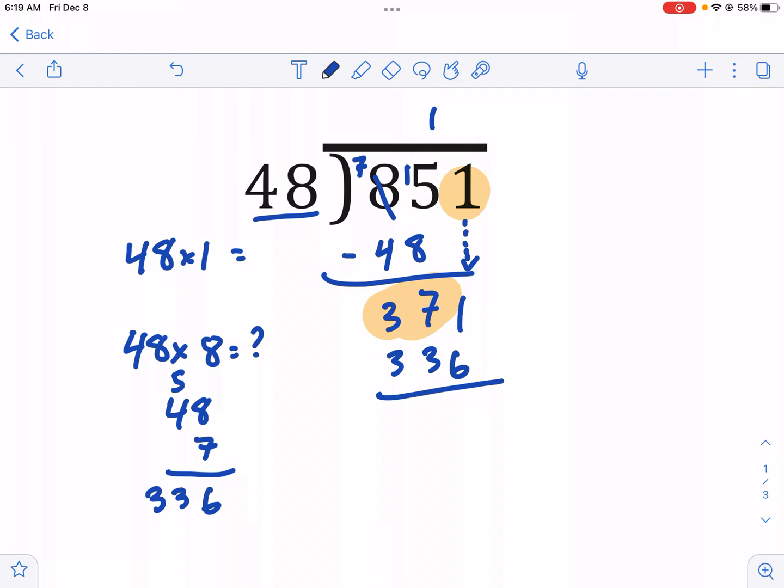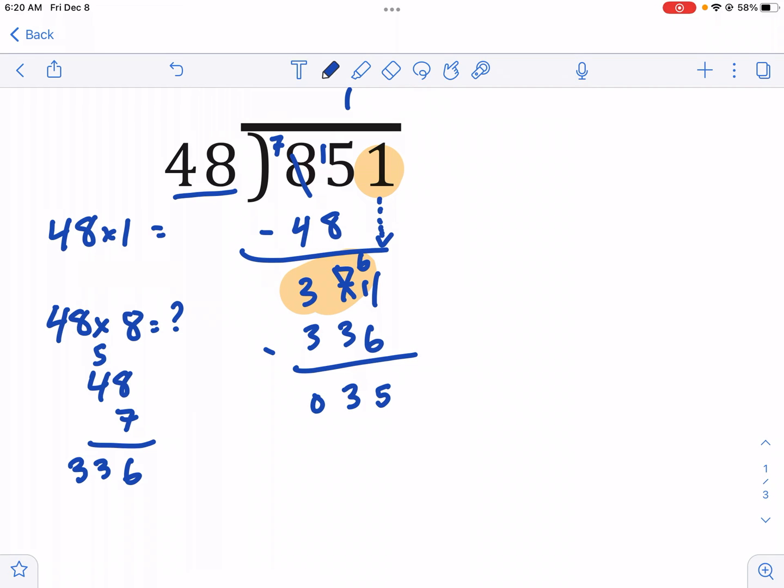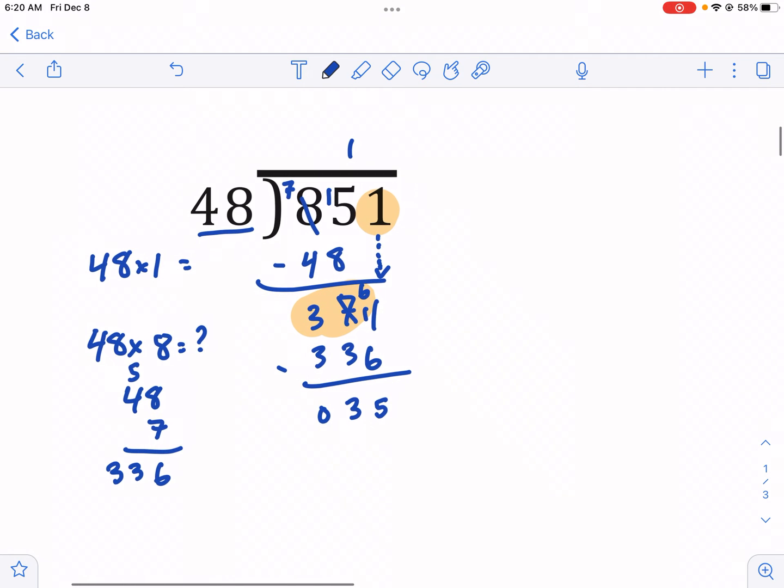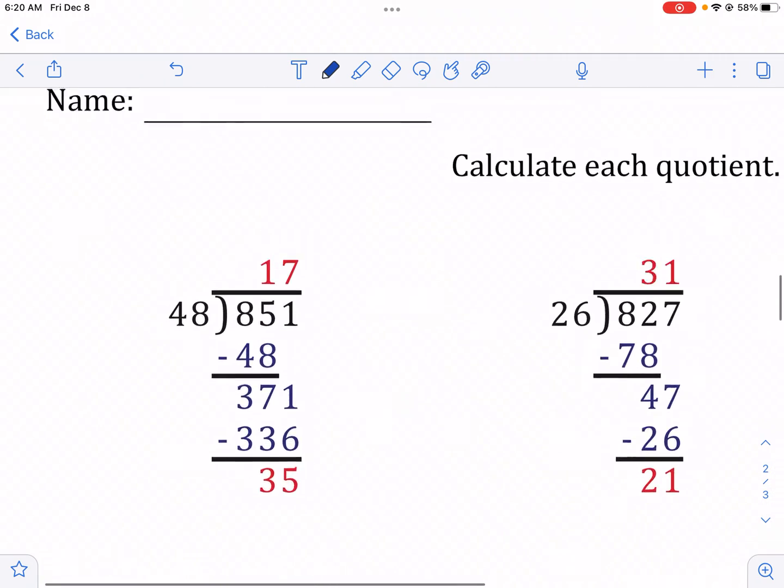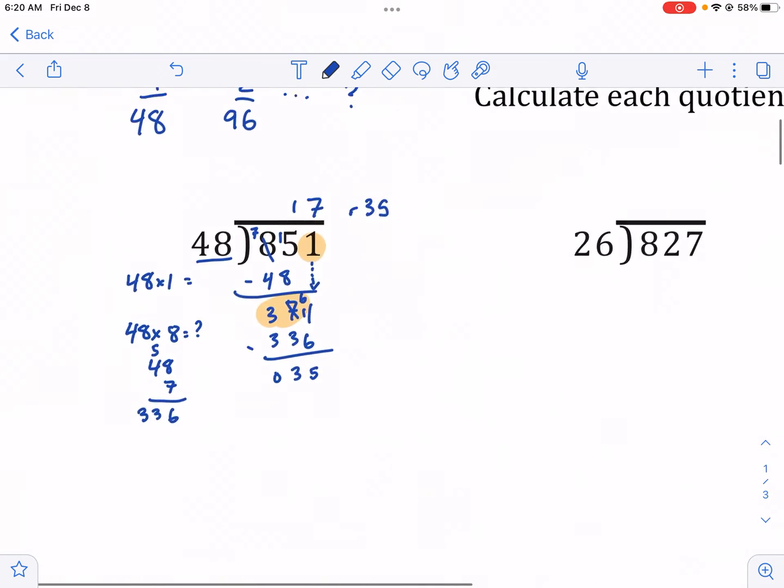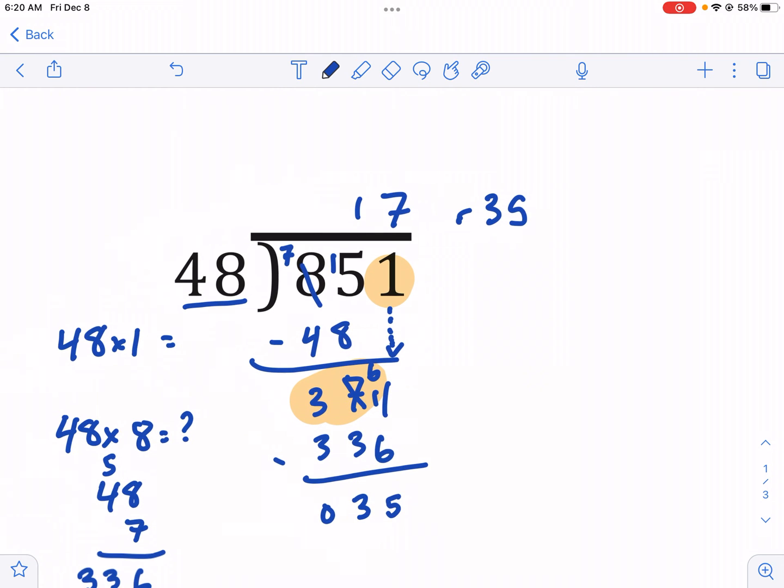And then what we're going to do here is we're just going to subtract to see how much we have left over. I'm gonna borrow that. And then we have 5, we have 3, and then we have 0. So we have 35. Now from here, you can see that we don't have, oh, I forgot to put 7 up here. So we have 17. And then we have a remainder of 35. So we don't have any more places to go because 48 doesn't fit into 35. This worksheet is looking for remainder. So we have 17 remainder 35 as our final answer.